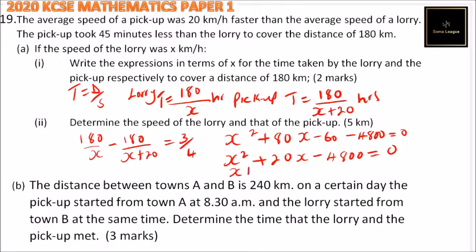So if you factorize this equation, you will be able to get x plus 80 and x minus 60. So this is equals to 0.